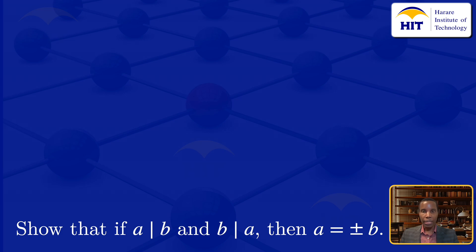To show this, I'm going to use the definition of divisibility. By definition, if A divides B, then there exists an integer C₁ such that B = AC₁. I'll call this equation 1.